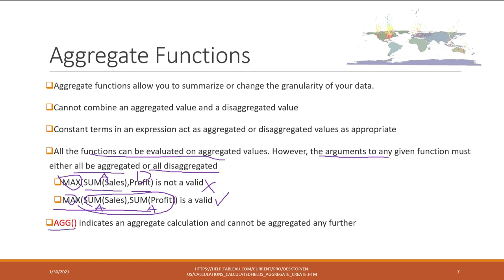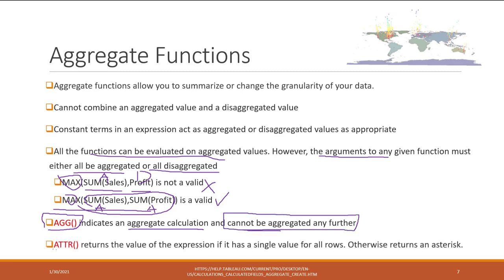AGGs indicate aggregated functions and cannot be aggregated further. ATTR is another aggregation function — it retains the value of an expression if that value has a single value for all the rows. Otherwise, ATTR is written as a star.